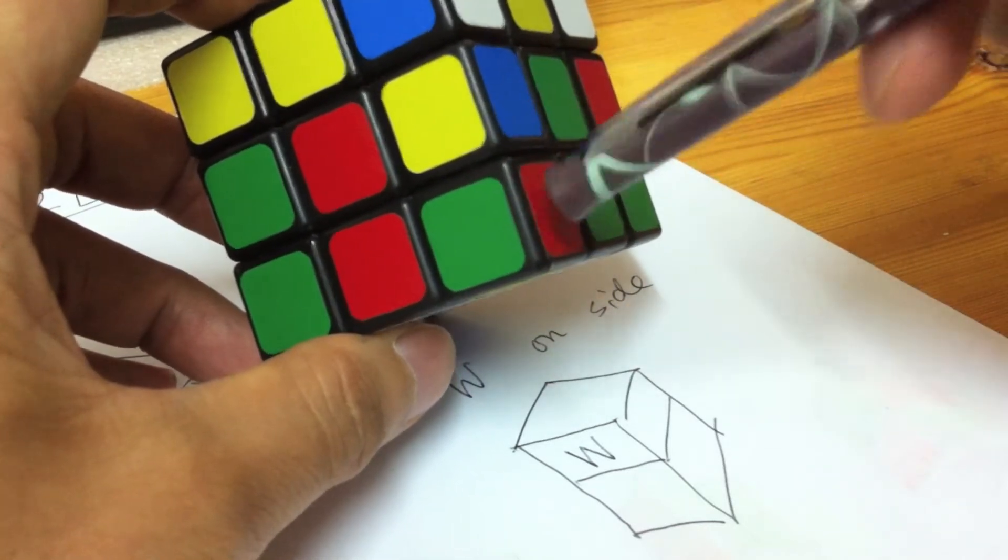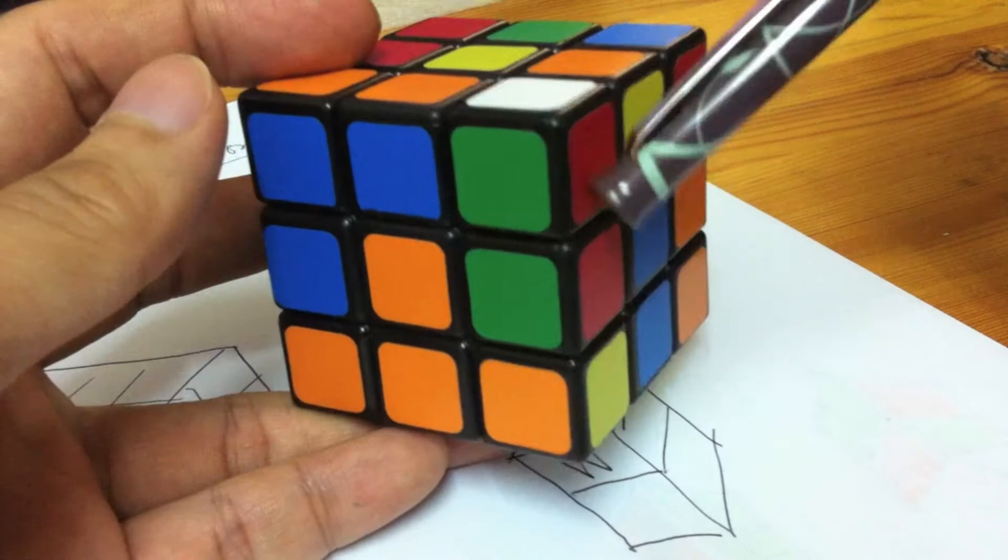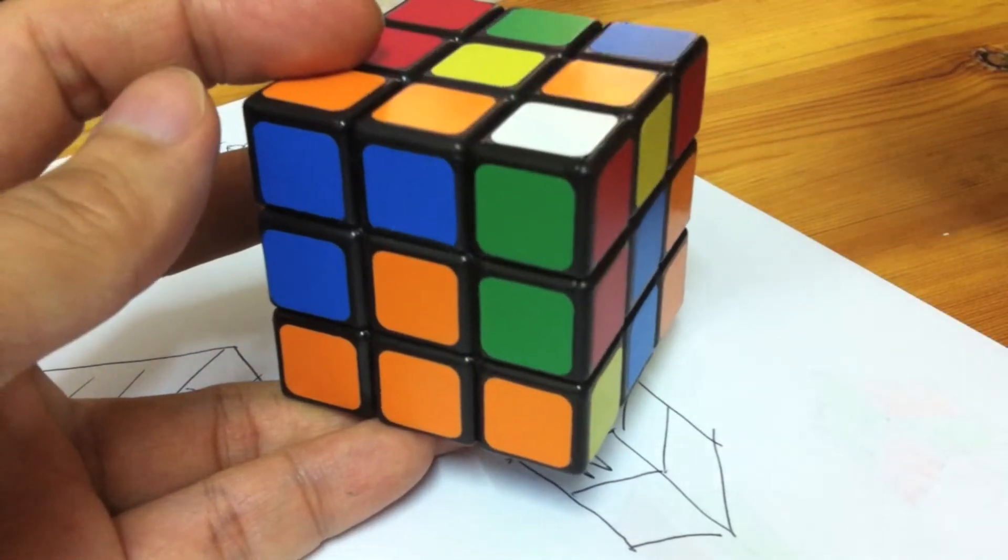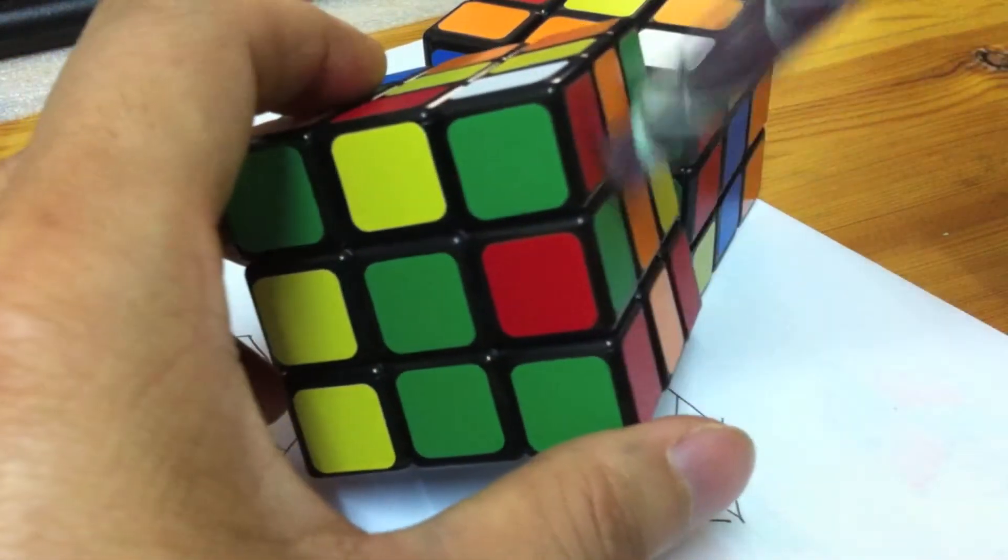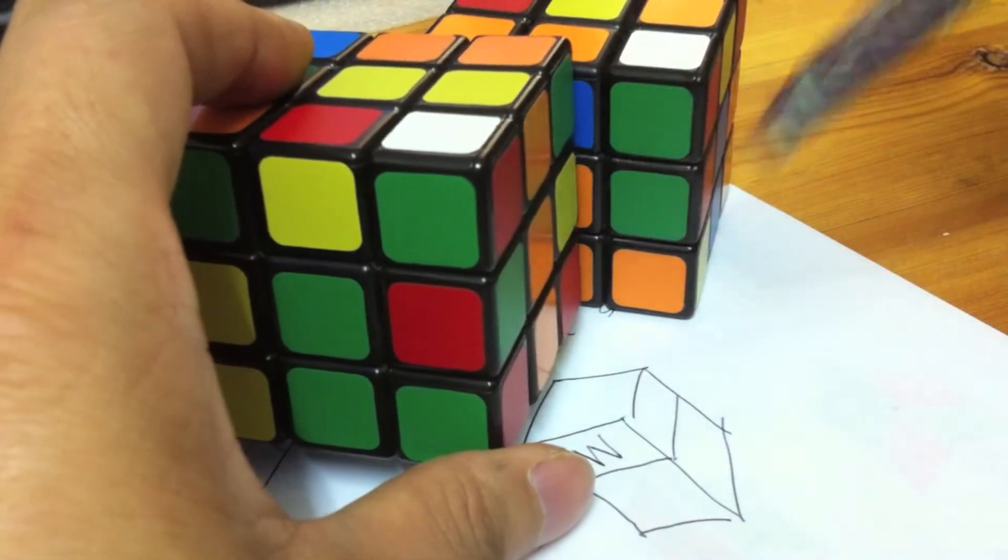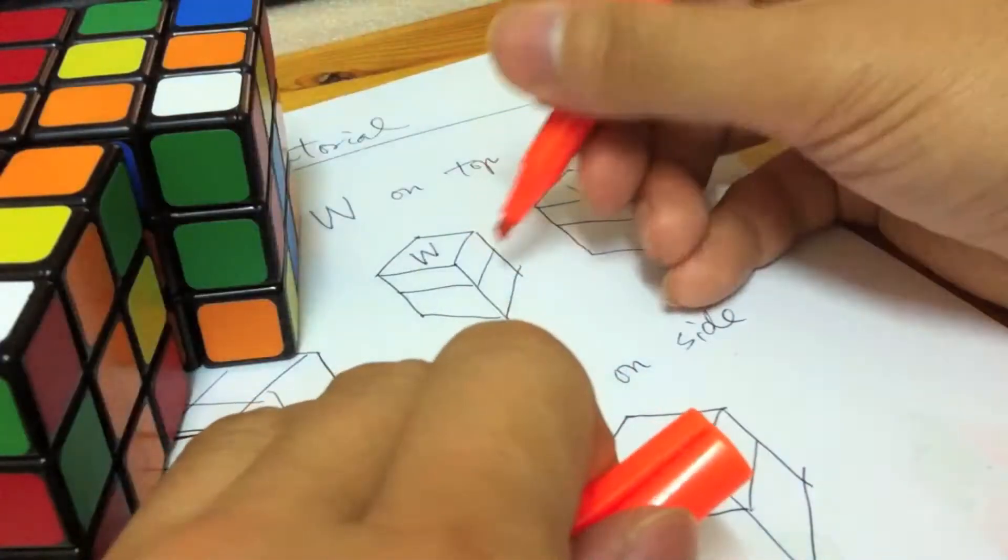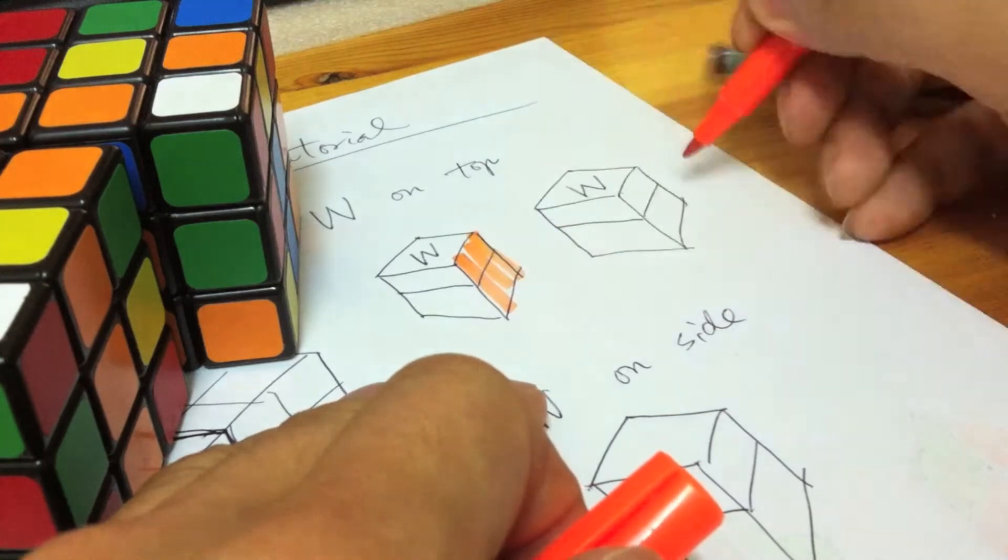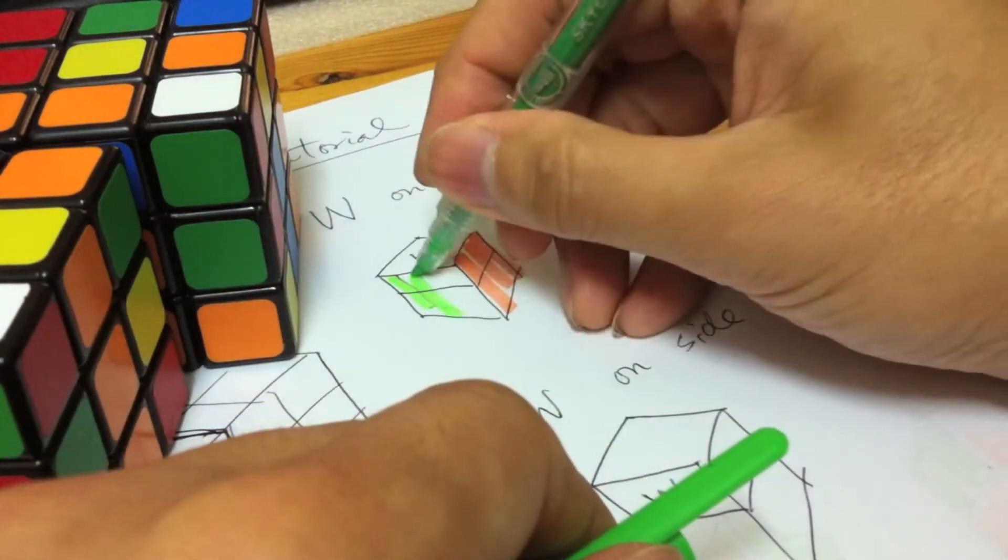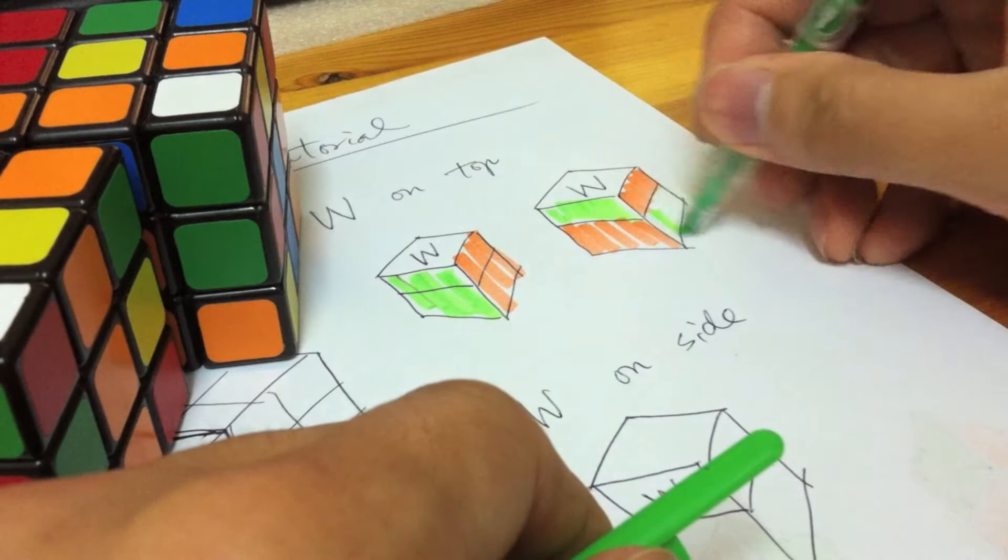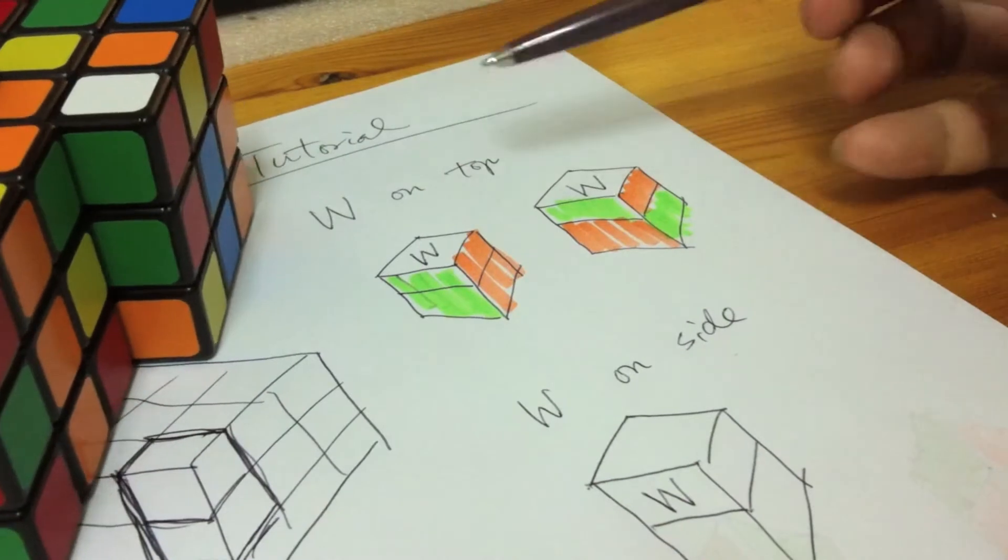These two red-green pieces, they are now here. This is the red-green column, white is on the top. Another white on the top example is like this: white on the top and the red-green is here. I can fill in my diagram by colors to illustrate their difference.